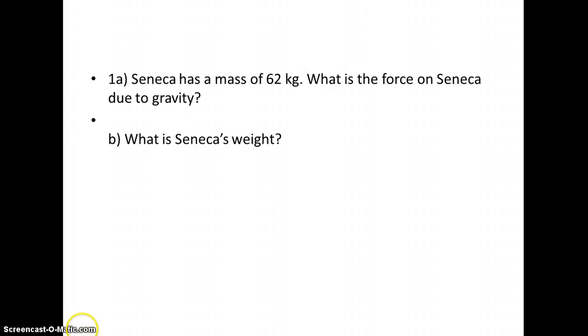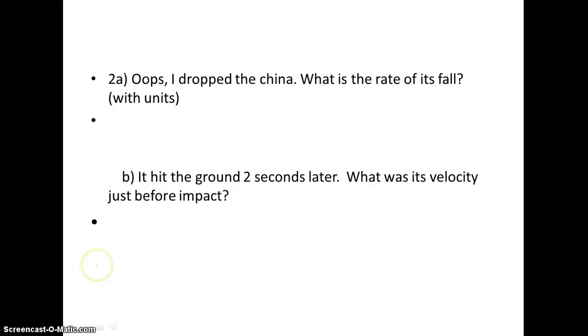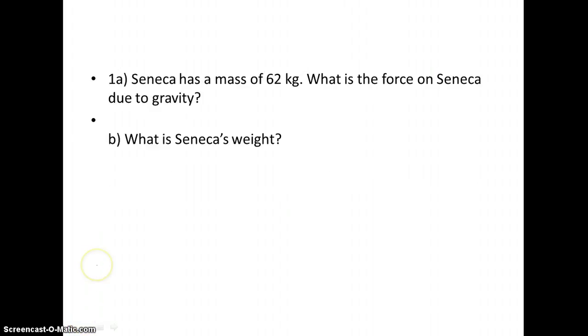So to start off with, we need to remember that we have two types of formulas that we're working with. We're working with F equals mg, and we're also working with x being position, which can be solved by one half gt squared. Alright, so how do you know which one to use?